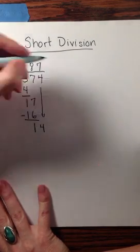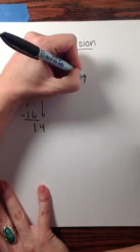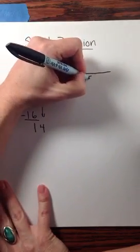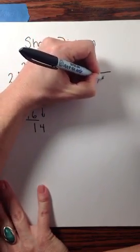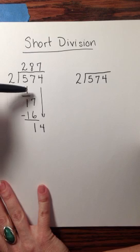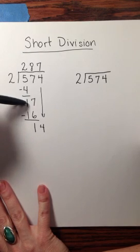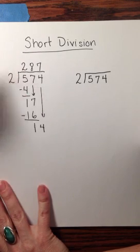So the difference when we're doing short division is that instead of writing down the multiplication answer and the subtraction answer and carrying the next digit down to it,